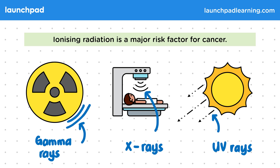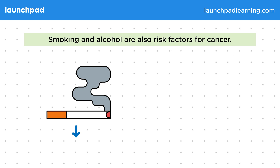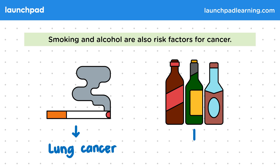What major lifestyle risk factors are there for cancer? Smoking and alcohol are also risk factors for cancer. Cigarettes can cause lung cancer, and there are over 50 chemicals in cigarette smoke that can cause cancer. Consumption of alcohol can cause liver cancer. For the exam, you must know that smoking is a risk factor for lung cancer, but other risk factors such as alcohol may also be told to you in the exam.